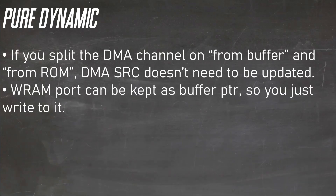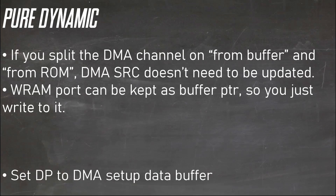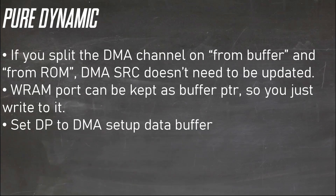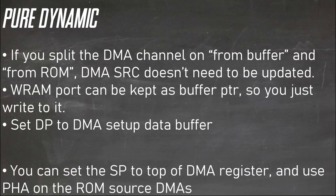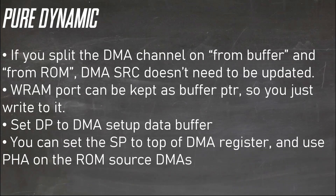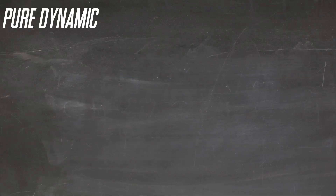You can set the stack to be at the top of the DMA register you want, then set the DP to start at the DMA data stack. This way you load with the DP instruction, which is faster, and then you can push A to write the value. So you get a three-clock read and a three-clock write, with some setup overhead, if you unroll the loop.